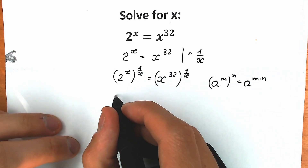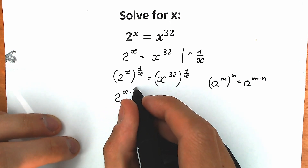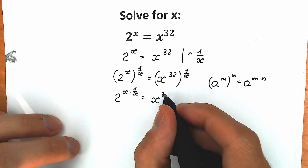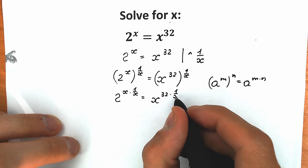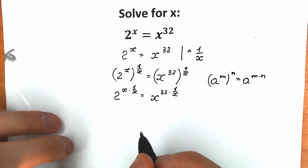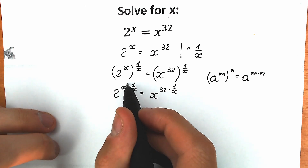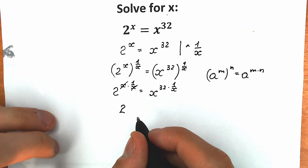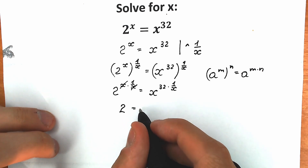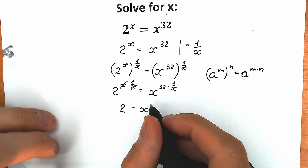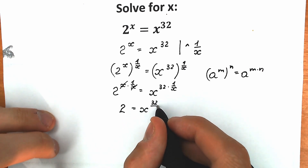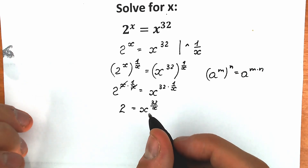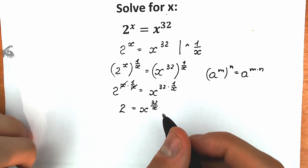As a result, on the left side we have 2 to the power x times 1 over x, equal to x to the power 32 times 1 over x. On the left side, we can cancel the x, so we have just 2. On the right side we have x to the power 32 divided by x, which we can write as a fraction.